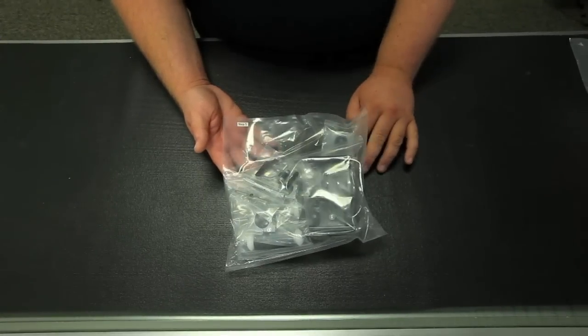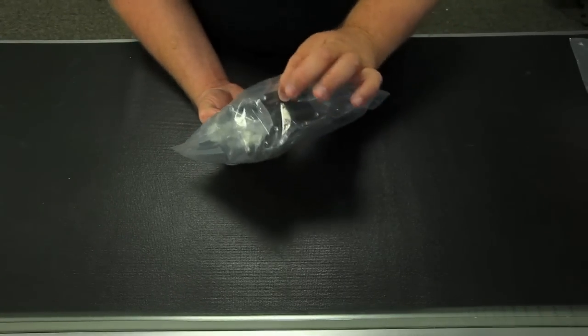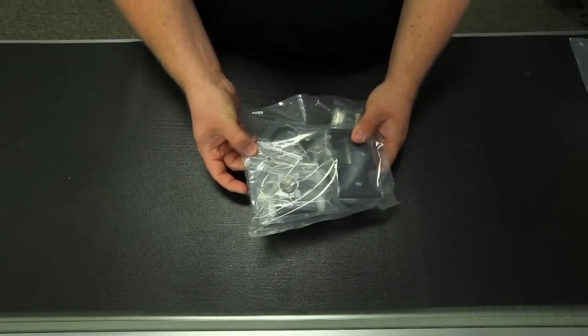Okay, we've got step five here. As you can see, this is most of your tail components. This is your forward transmission with the gears pre-installed. Your tail boom insert gears. Tail pitch slider assembly. Tail hub.